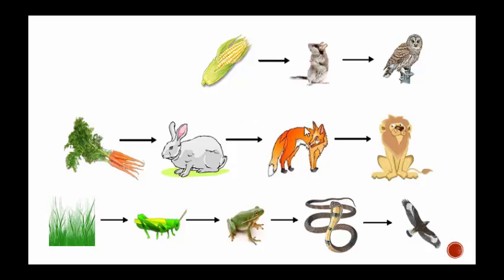Let's take a look at the fox. The fox is one step away from the primary consumer or two steps away from the producer. And then we have the lion, which is one step away from the secondary consumer, two steps away from the primary consumer, or three steps away from the producer.